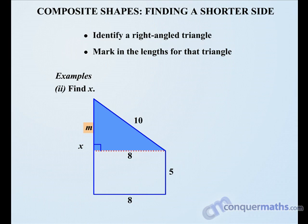So M is a shorter side in this triangle, so we write M² equals—the hypotenuse is 10, so 10², and because we're finding one of the shorter sides, we subtract 8². So M² equals 10² minus 8², which is 36. We take the square root and find M equals 6.